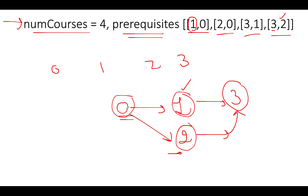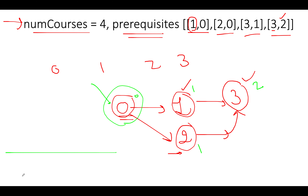The most interesting part is node 0 — we can freely take this course because there are no incoming edges on it. To represent this mathematically, we count incoming edges (indegree) for each node: node 0 has indegree 0, node 1 has 1, node 2 has 1, and node 3 has 2. We create a queue and add all nodes with indegree 0. Only node 0 qualifies, so we add it to the queue and start building our answer.